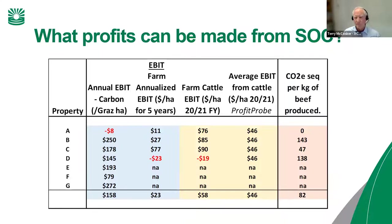If you look at it from a live weight basis, it's double that. The lowest was 47 kilos and the next was 138 kilograms of CO2 sequestered per kilogram of product. When the market people saw this yesterday, the price of soil carbon credits just shot up.